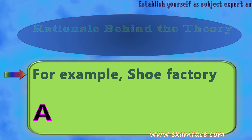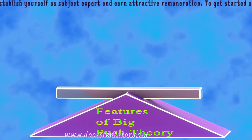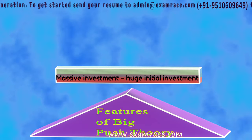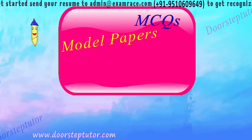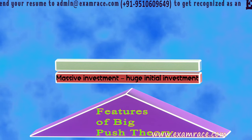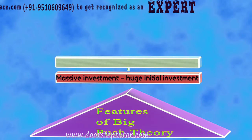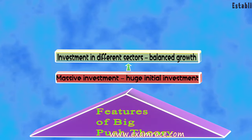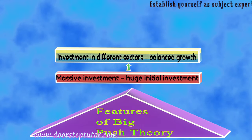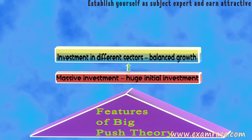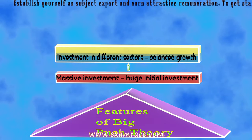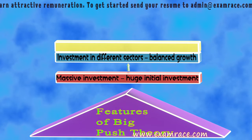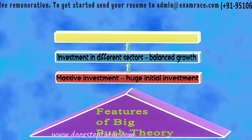The first feature of the Big Push Theory is massive investment. There has to be a huge initial investment at the very beginning of the growth process, because according to Rosenstein-Rodan a small investment is a wastage of resources. The second feature is investment in different sectors. By investing in different channels and sectors, each channel sustains the growth of one another by providing the demand base — as seen in the shoelace and shoe example — leading to balanced growth where each sector supports another.